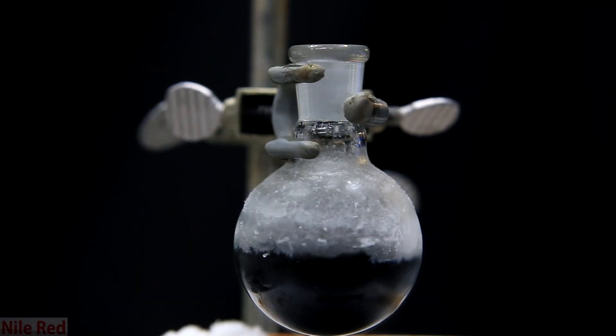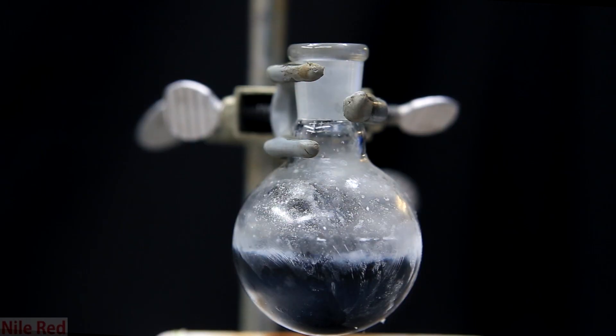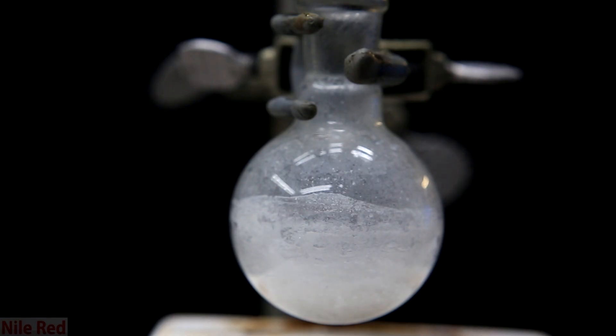After an hour it's removed from the cold bath and the stopper is removed. I leave it like this stirring at room temperature until all of the liquid ammonia evaporates. When I come back after a few hours I'm left with a flask coated with a white solid.